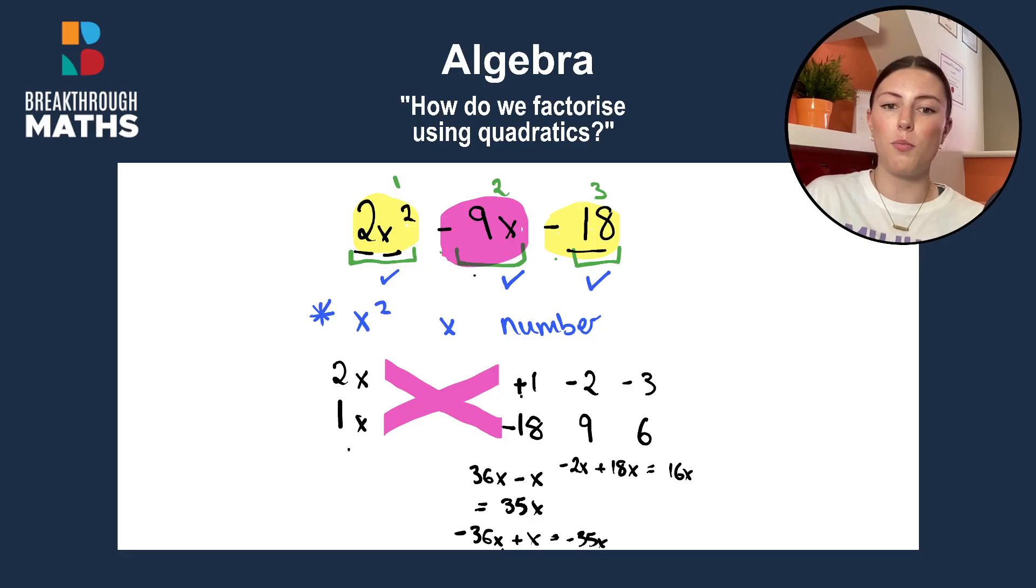But we're getting closer than what we were with 35 and minus 35. If we were to switch it around and do plus 2 minus 9, we'll just get minus 16. So it'll be the same thing, just minus 16. So minus 9 by plus 2 is minus 18, and plus 2x is minus 16x. Right, so we've ruled out both of these options.